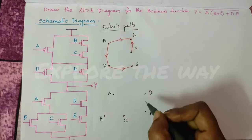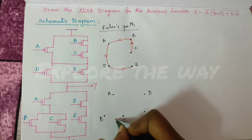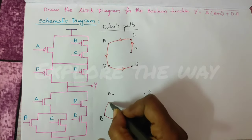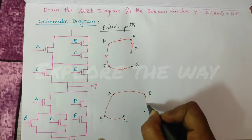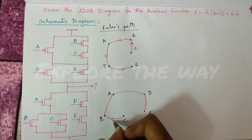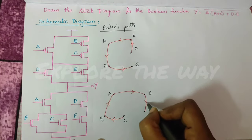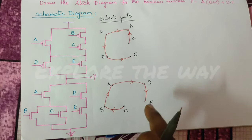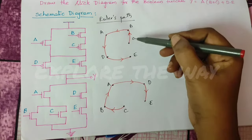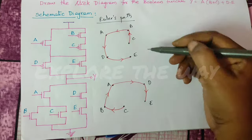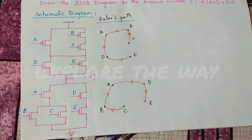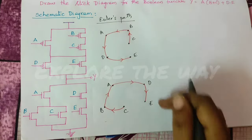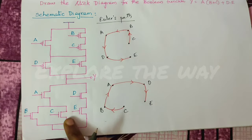Similarly... In both the cases, the path is same: C, B, A, D, E. C, B, A, D, E. So, this is the Euler's path for this schematic diagram.